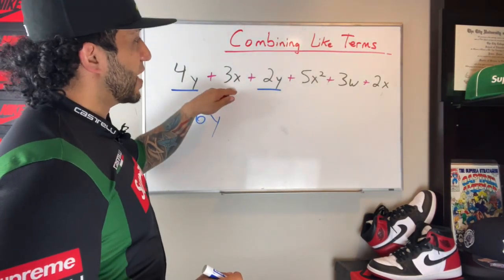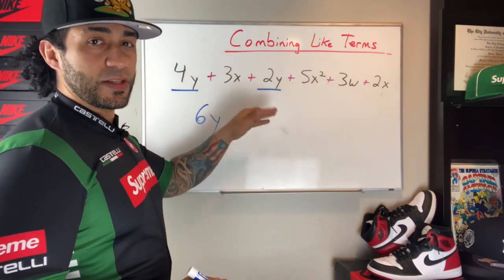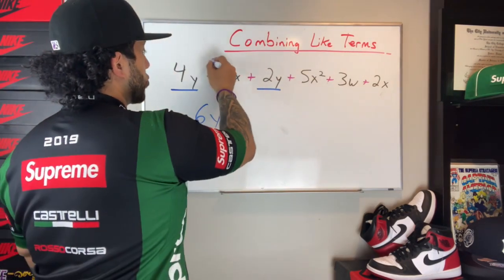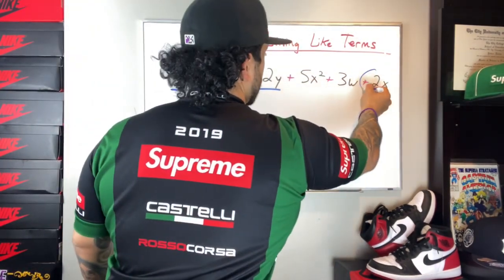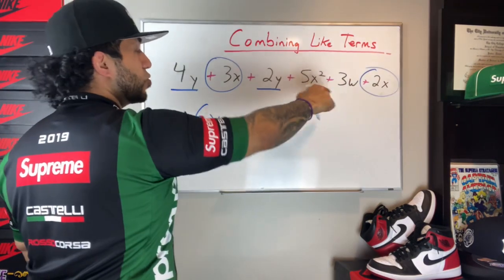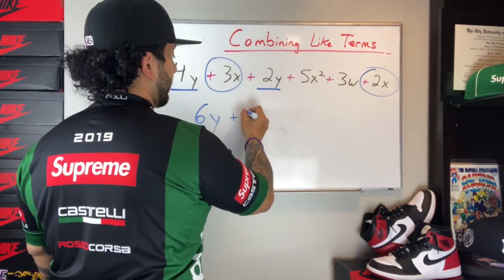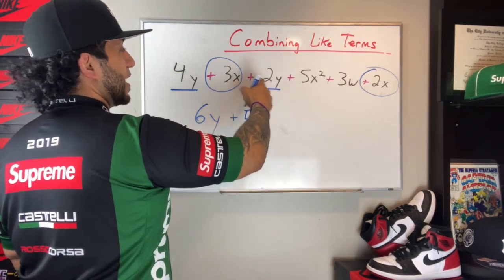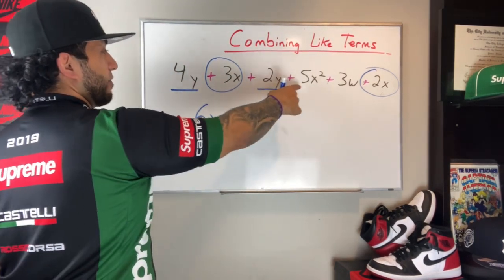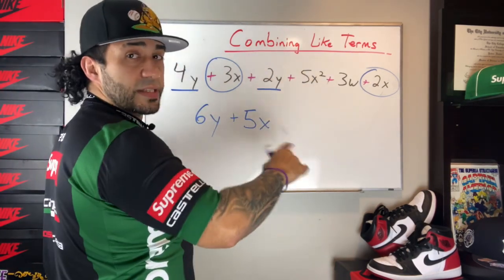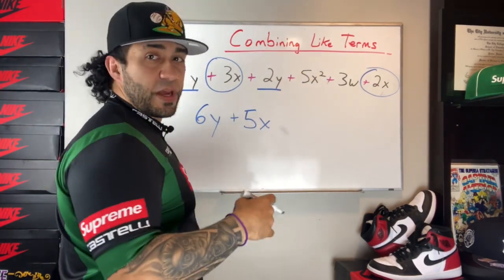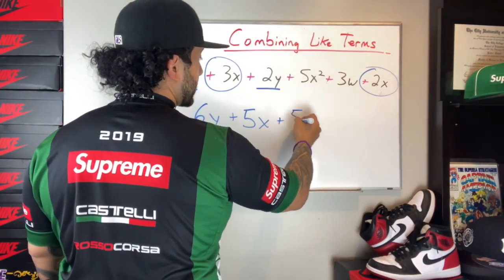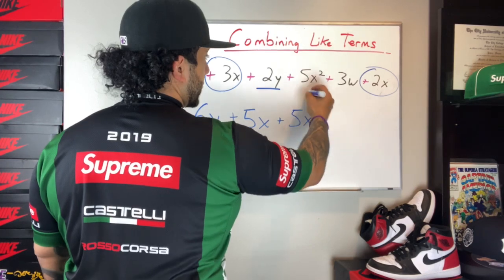Then I have x. I'm going to ask myself, do I see any other instances with the variable of x? I have 3x and 2x — I'm going to circle them. 3x plus 2x is 5x. Now I've taken care of the y and the x terms, and I have 5x to the second power. There are no other instances of that, so if I had one I may have used a different shape like a square or a triangle. I'm going to bring down this 5x to the second power.